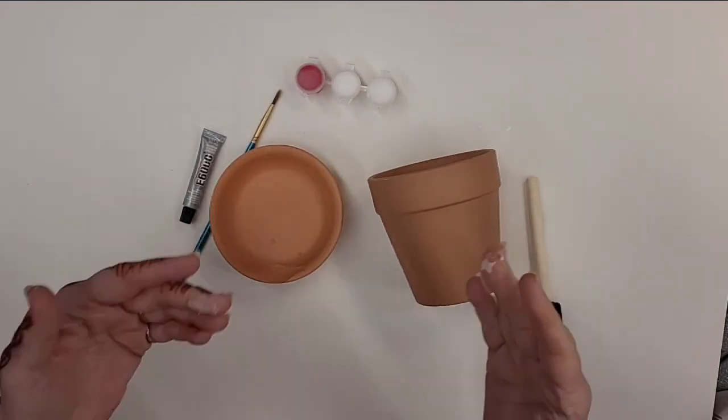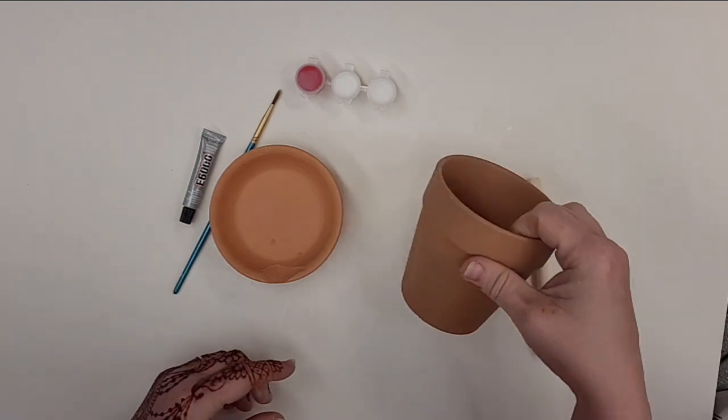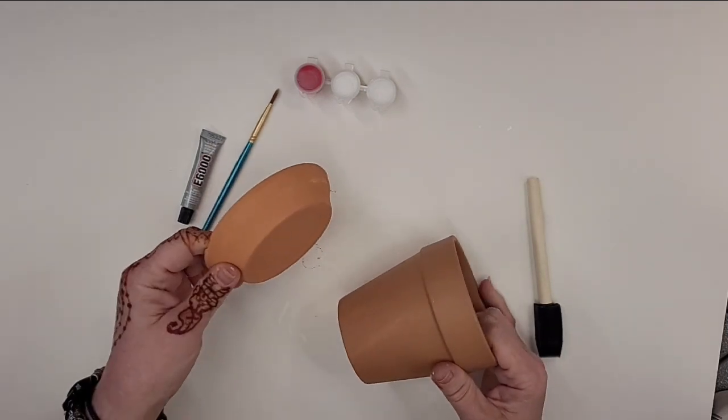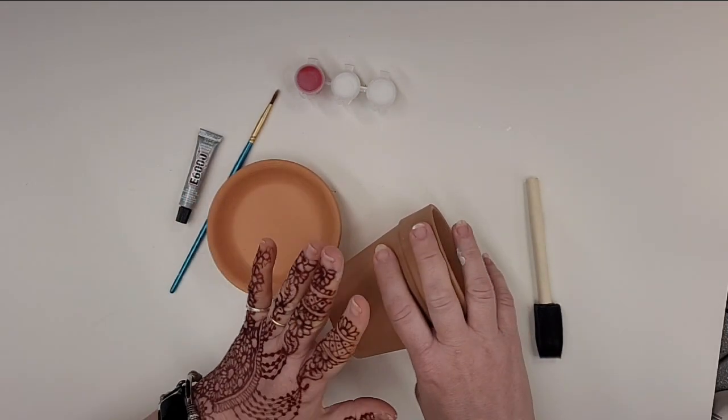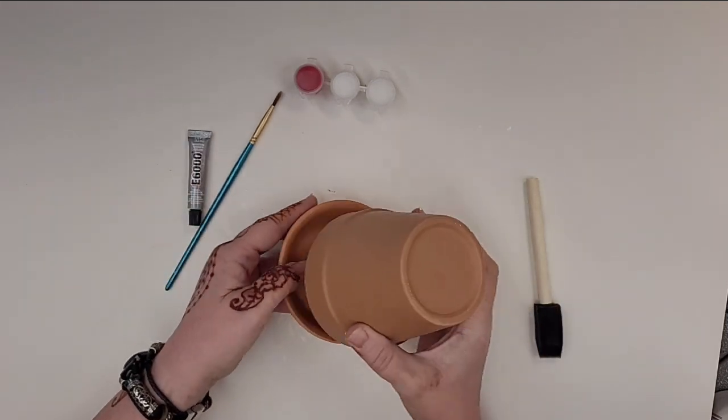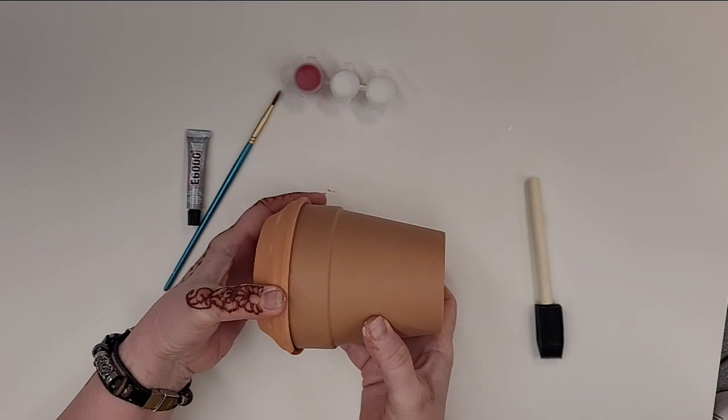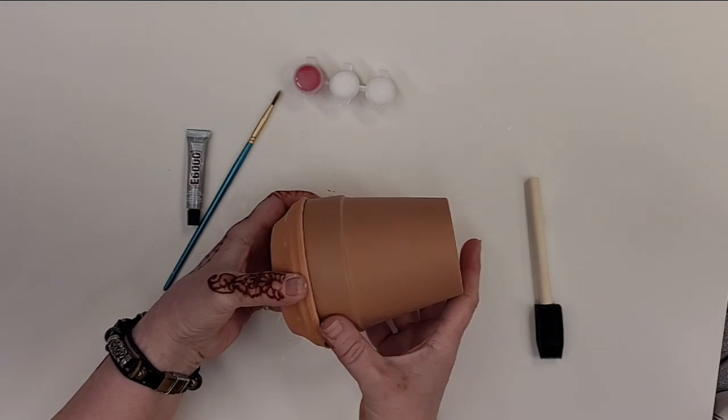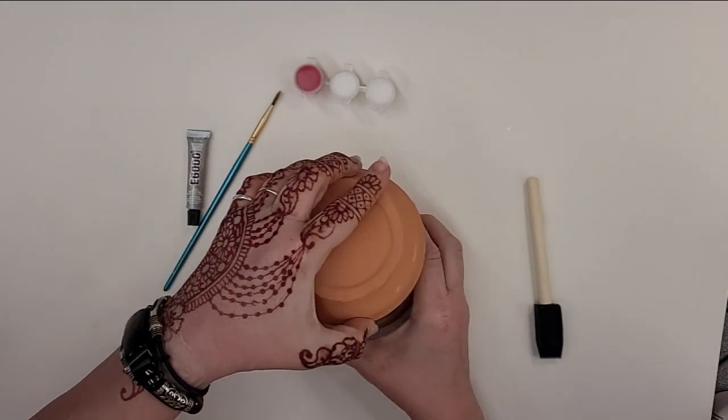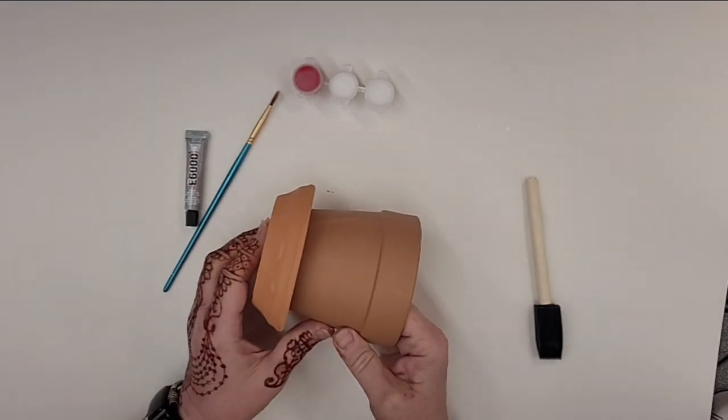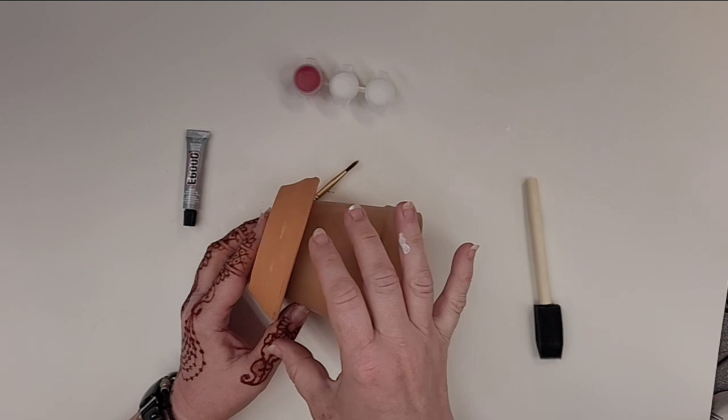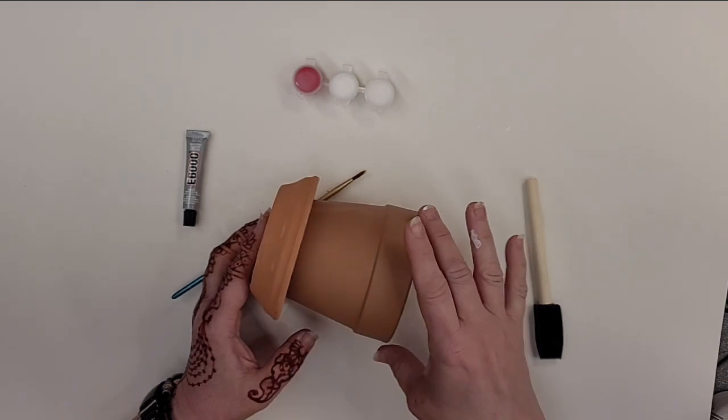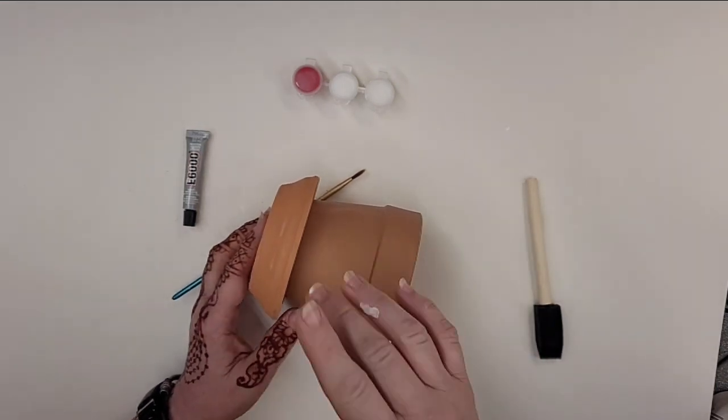So what you'll have in your kit or what you'll need to purchase is a small terracotta flower pot and a terracotta saucer. It doesn't matter what size you use, but make sure that the saucer rim is about the same size or a little bit bigger than the flower pot rim. If the saucer is too small, it's going to look out of proportion.